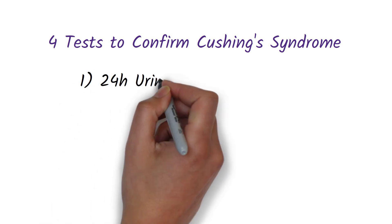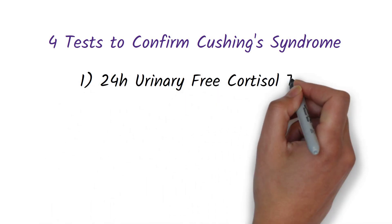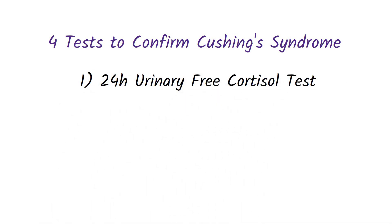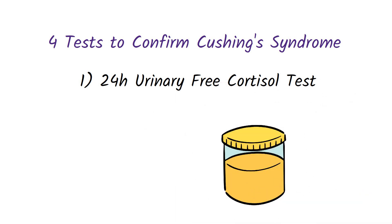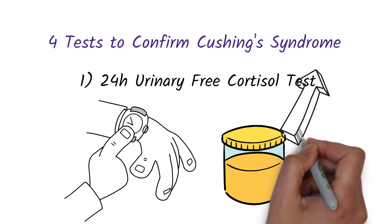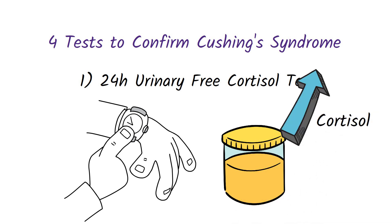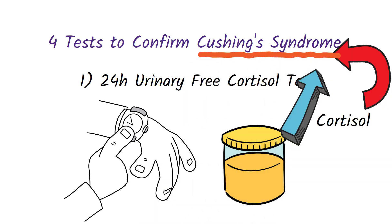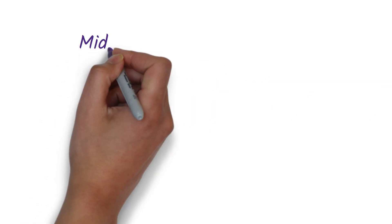Test number one is the 24-hour urinary free cortisol test. This test measures the level of cortisol in your urine. Since cortisol is released at different times during the day, the best way to measure it is to collect the urine you produce over 24 hours. An abnormally high urine free cortisol level is indicative of Cushing's syndrome.